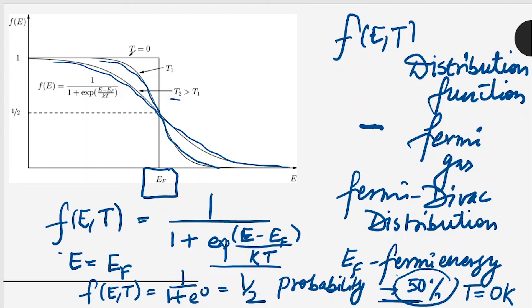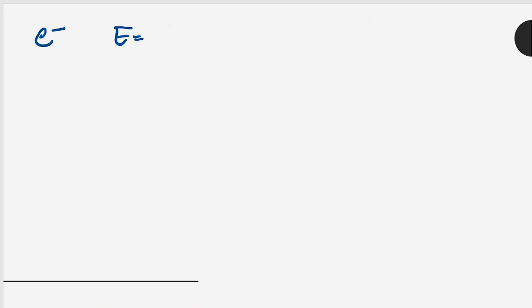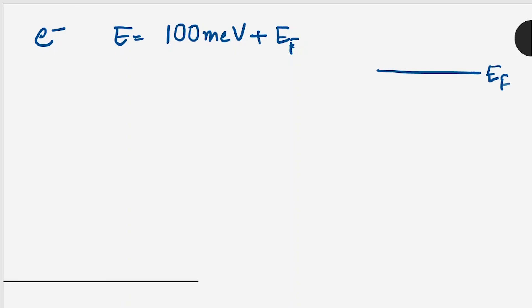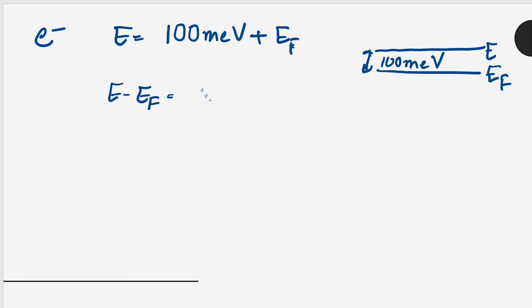Moving on to the next part, where we have to find the temperature for an electron occupying an energy level 100 meV above the Fermi energy E_F. So this difference, E minus E_F, equals 100 meV. We can write this as 10^(−3) electron volt times 100, which becomes 0.1 electron volt.